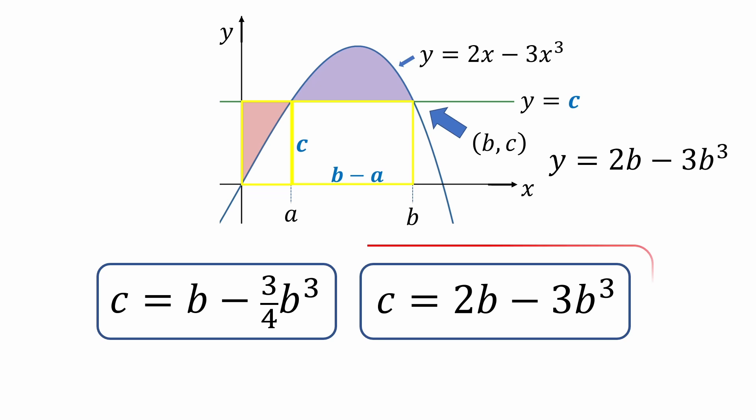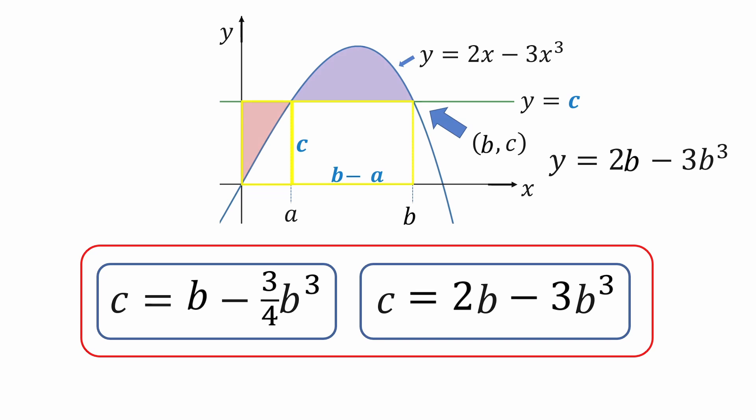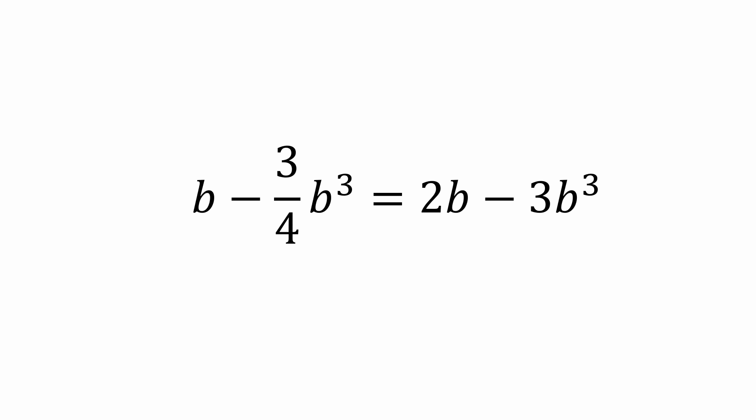So let's set these two expressions equal to each other to get a new equation strictly in terms of b. We'll collect the cubic terms on the left and the linear terms on the right. Now let's multiply both sides by 4. The left side becomes 9b cubed. And now we'll divide both sides by b to get 9b squared equals 4. Dividing by 9 and taking the square root, we get b equals 2 thirds.